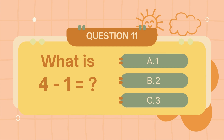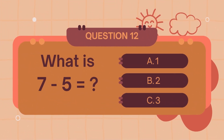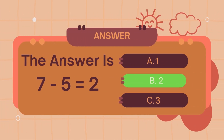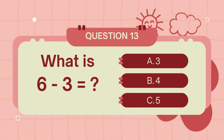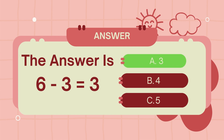What is 4 minus 1? What is 6 minus 3? The answer is 3. What is 7 minus 5? The answer is 5.